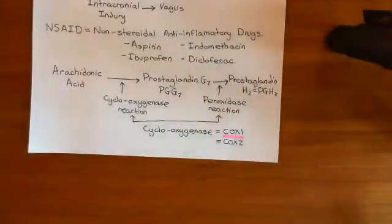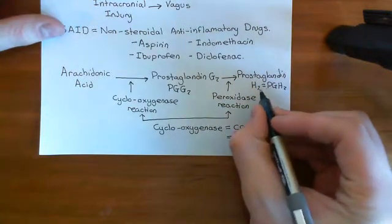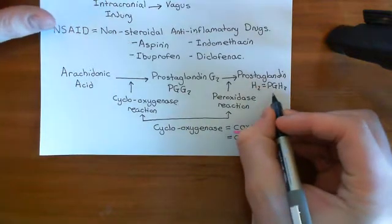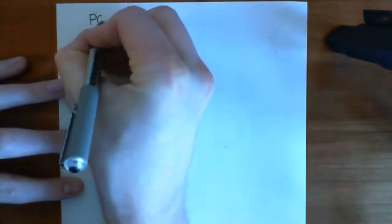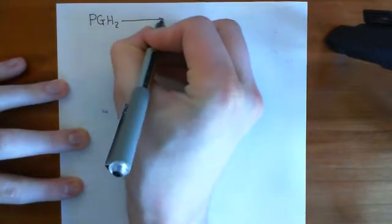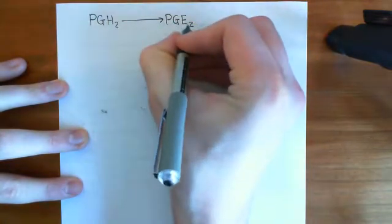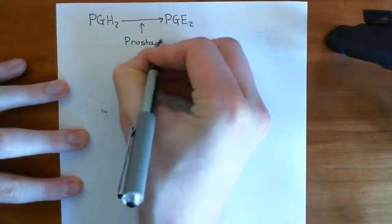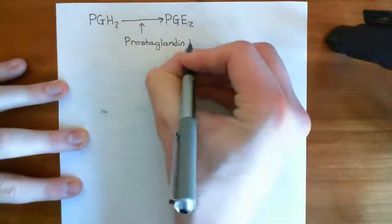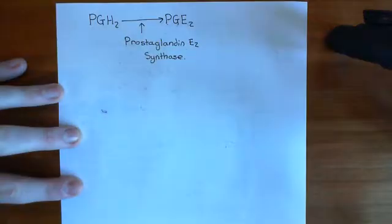The prostaglandin produced by these stomach mucosal cells is prostaglandin E2 (PGE2). They take prostaglandin H2 and convert it into prostaglandin E2, which is the prostaglandin they then secrete. This conversion from prostaglandin H2 to prostaglandin E2 is catalyzed by the enzyme prostaglandin E2 synthase.